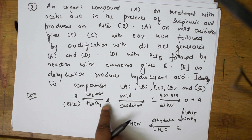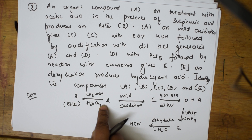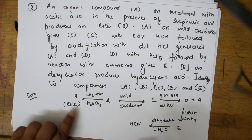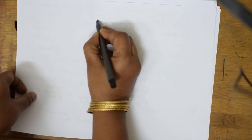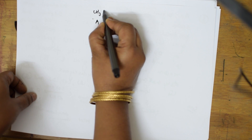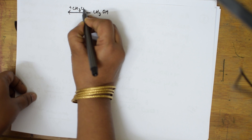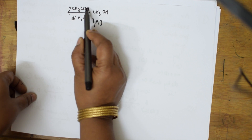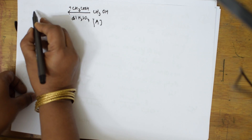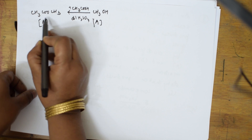Let us do step by step. A, we have got methanol. Because acid they have already given me; alcohol I know. So together it forms an ester. Let us take the basic one — A is methanol, CH3OH. This A was treated with acetic acid. Acid plus alcohol gives ester in the presence of dilute sulfuric acid. Take out the water molecule — H from here, OH from here. I am going to get an ester. This is methyl acetate.